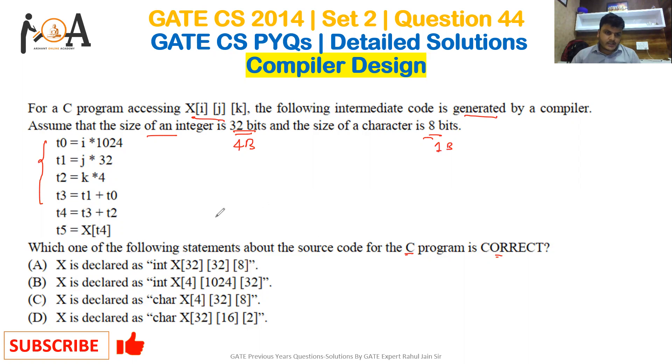Observe here: we have t5 equals X[t4]. If I expand t4, it leads to t3 plus t2. So it is t3 plus t2. If I apply it again, t2 is nothing but k into 4, and t3 is t1 plus t0. So I can write it like t3 is t1 plus t0 plus t2, where t2 is k into 4. I have expanded t3 here, now follow these steps.